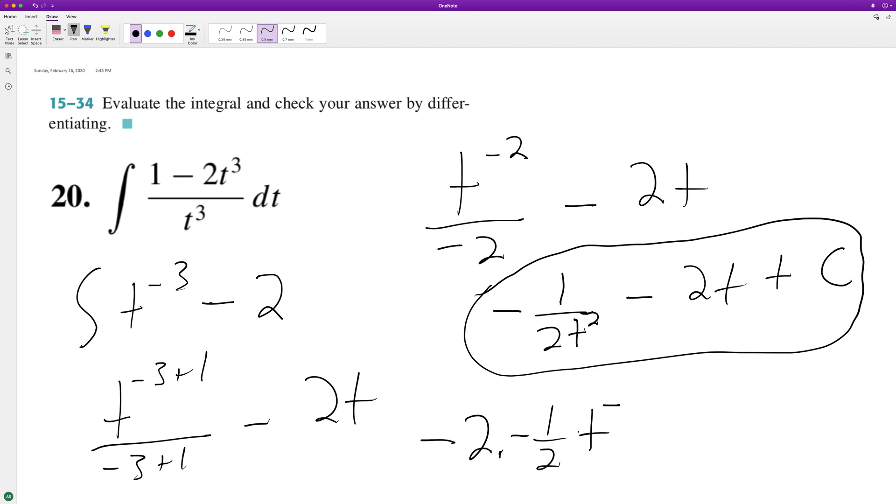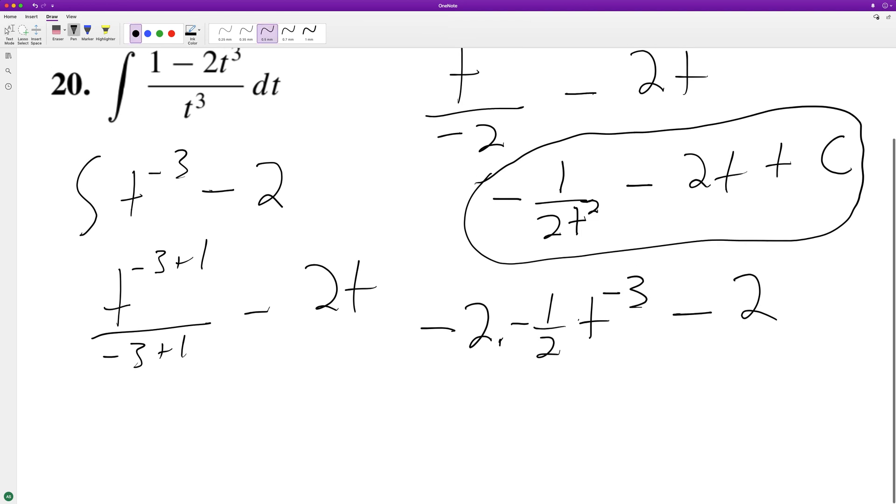So then we end up with t raised to negative 3 minus 2, or you can convert this into, again, 1 minus 2t cubed over t cubed. It converts to that if you want it to.